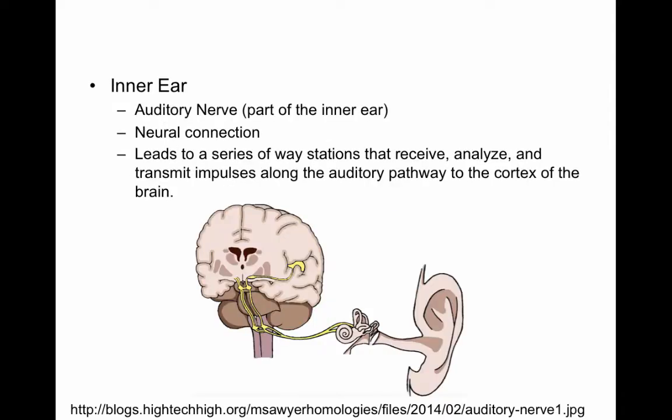The inner ear also contains the auditory nerve — that's your neural connection. There's a series of way stations that receive, analyze, and transmit impulses all the way up the auditory pathway to the cortex of the brain.